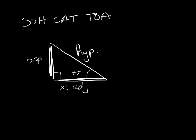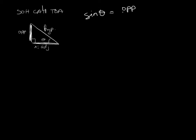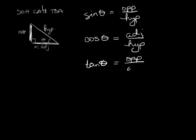So when we do SOHCAHTOA, the sine of the angle is equal to your opposite over your hypotenuse. The cosine of the angle is equal to the adjacent over the hypotenuse. And the tangent of the angle is equal to the opposite over the adjacent.